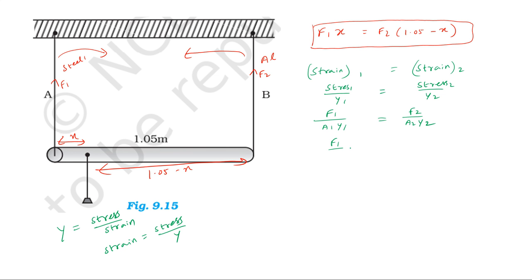So F1 by F2 equals A1 × Y1 divided by A2 × Y2. A1 is 1 mm² divided by A2 which is 2 mm². Y1, the Young's modulus of steel, is 200 × 10⁹ Pascal. Divided by Y2, the Young's modulus of aluminium, which is 70 × 10⁹ Pascal. The 10⁹ terms cancel out.